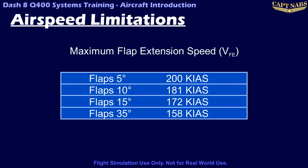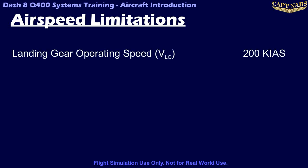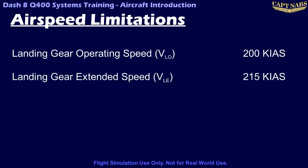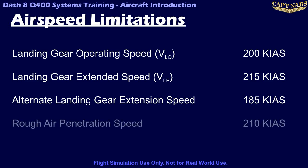VFE is the maximum flap extension speed — flaps should not be extended above the speed indicated for each flap setting. The maximum landing gear operating speed, or VLO, is the maximum speed at which it is safe to extend or retract the gear. VLE, or the maximum landing gear extended speed, is the maximum speed for the aircraft once the gear is already extended. The alternate gear extension speed is the maximum speed at which it is safe to run the alternate gear extension mechanism. The rough airspeed is the maximum airspeed for flight in severe turbulence.